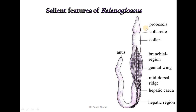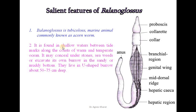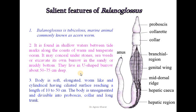This is a diagrammatic representation of Balanoglossus. Body is simply divided into proboscis, collar, and the trunk region which ends into the anus posteriorly. Balanoglossus is a burrowing marine organism, commonly known as acorn worm. It is found in shallow waters between tide marks along the coast of warm and temperate oceans. It may be concealed under stones, seaweeds, or excavate its own burrows in sandy or muddy bottom. They live in U-shaped burrows about 50 to 75 cm deep.